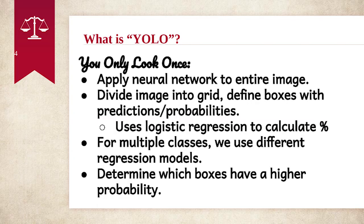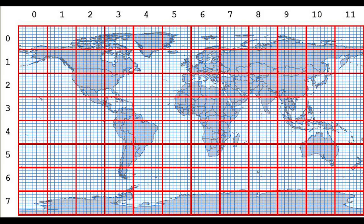We use logistic regression to calculate the probability for each class within each grid. For multiple classes, we use different regression models. For example, we'll use one logistic regression to train on cars, one logistic regression to train on people, etc. Lastly, we determine which boxes — those mini grid squares — have a higher probability of being that object or class that we trained the logistic regression model for.